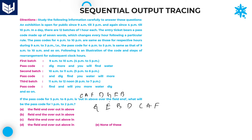Checking: G equals 'the' — must start with 'the', so eliminate options B and C. E equals 'field', B equals 'end', D equals 'over', C equals 'out', A equals 'in', F equals 'above'. Option A is the right answer for this question.